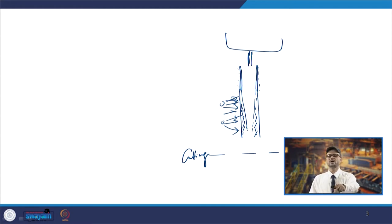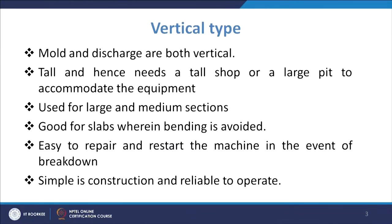An important point in the vertical type is that you start work at a height, and since the product is coming in the vertical direction, you need vertical space. The overall height will be very large, and that is why you need a tall kind of machine — either a tall shop or a large pit to accommodate the equipment.